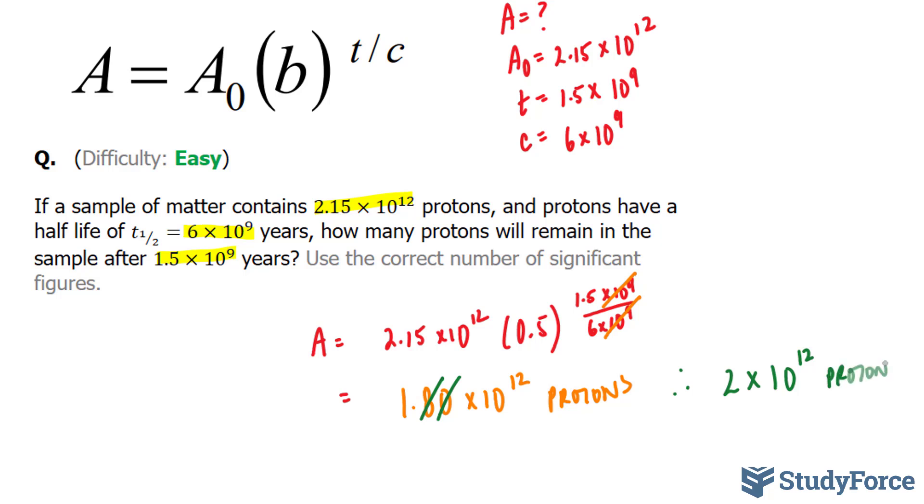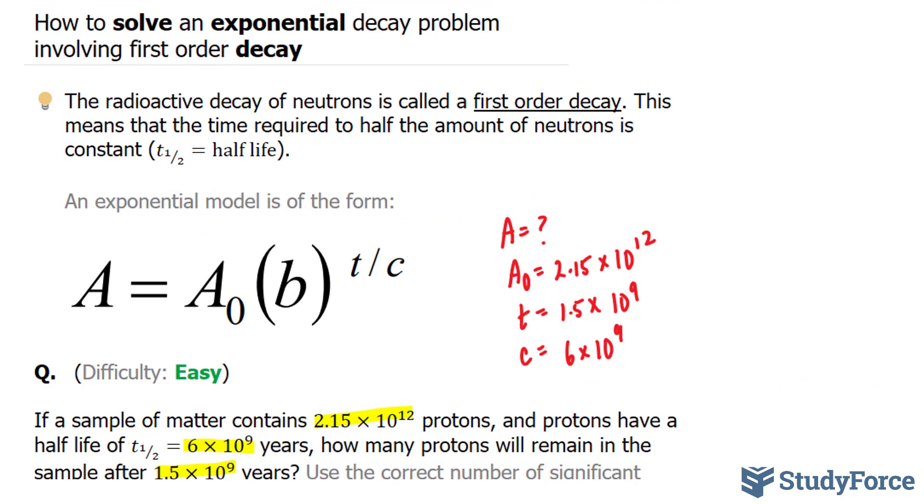Because by including these numbers, we are telling the reader that this calculation is more accurate than the numbers that we were provided, which is not the case. And so there you have it. That is how to solve an exponential decay problem involving first order decay.